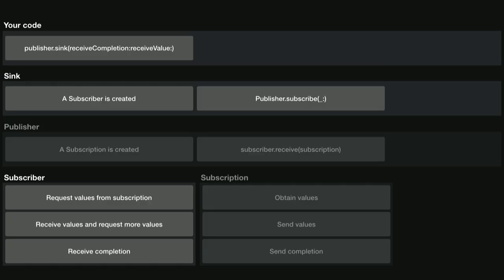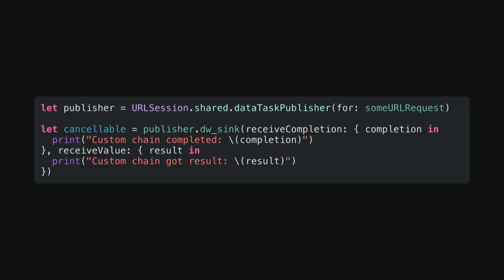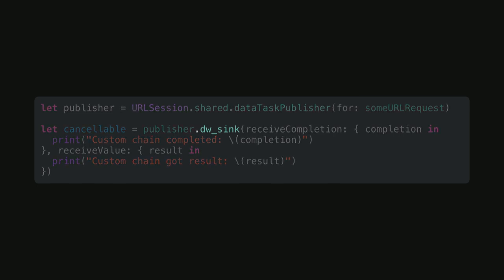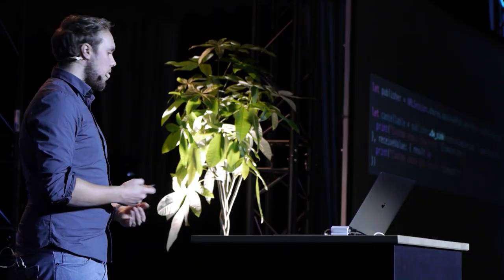At this point we've implemented a lot of what the diagram showed — everything highlighted is now present in our custom implementation. We can already use the custom DWSink method and DWSink object. If you're struggling to see the difference, that's great, because the only difference is the Sink we're using. Because DWSink is defined as an extension on Publisher, it should work with any publisher in Combine. This allows you to put custom logic inside a subscriber without cluttering up your API.